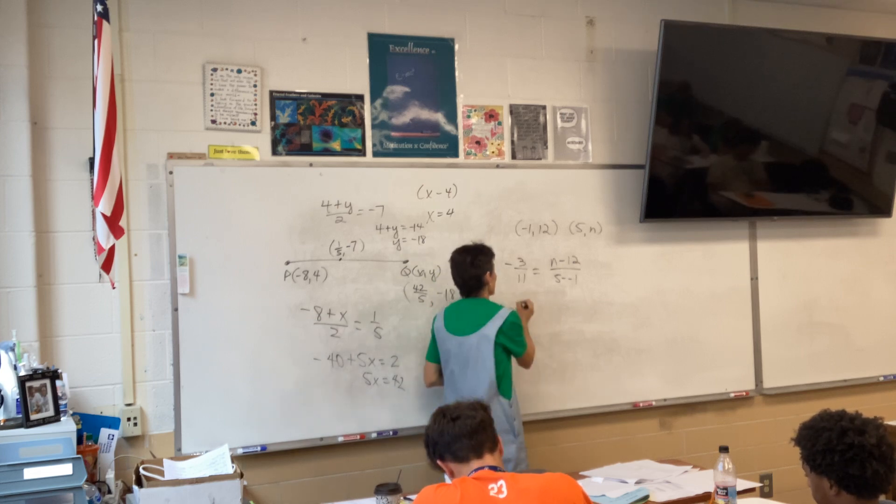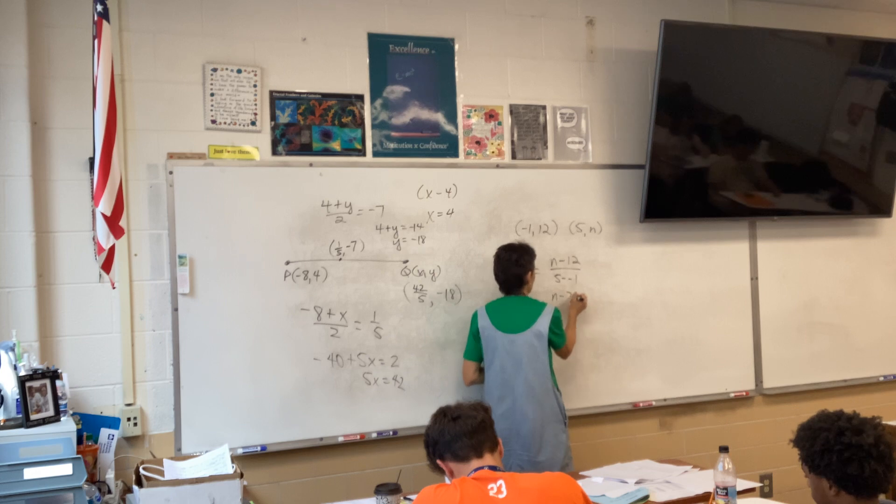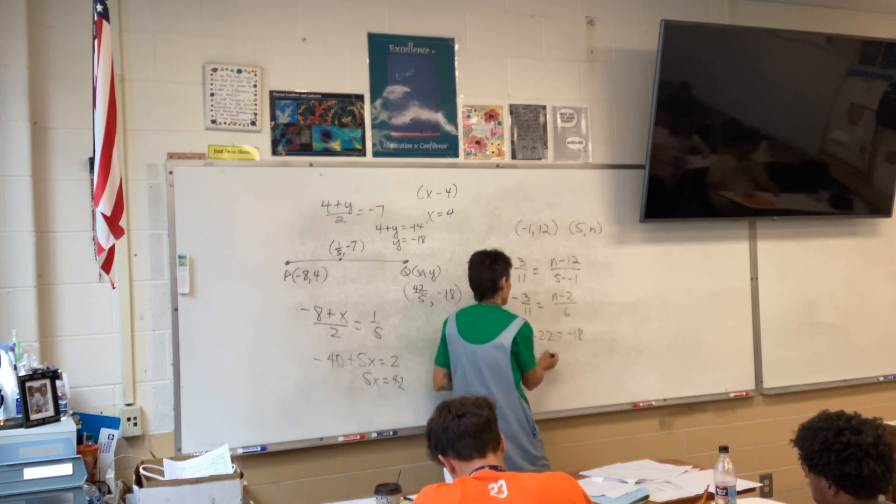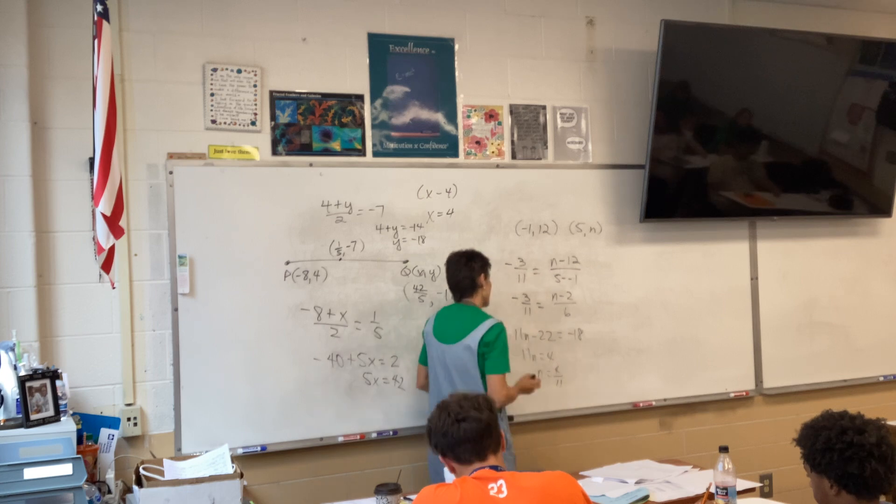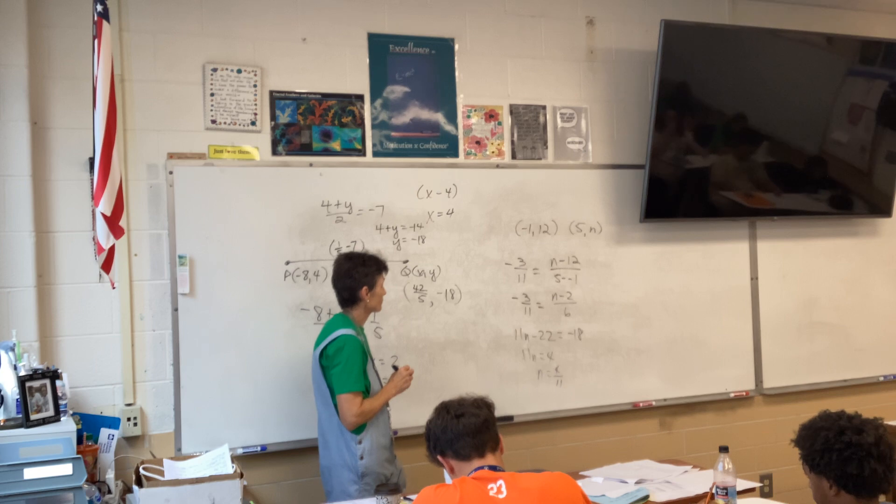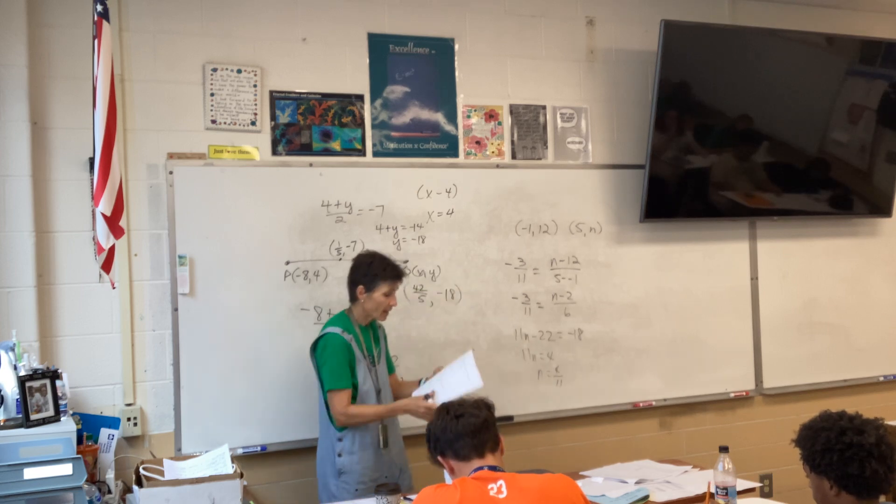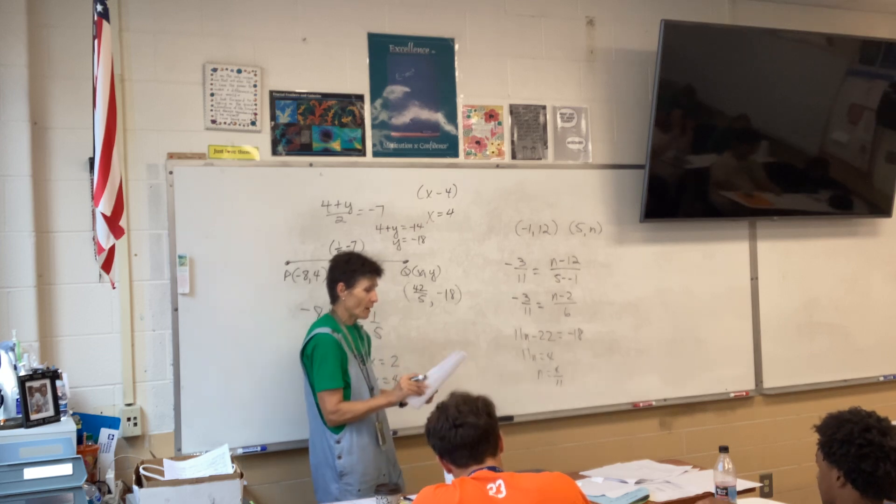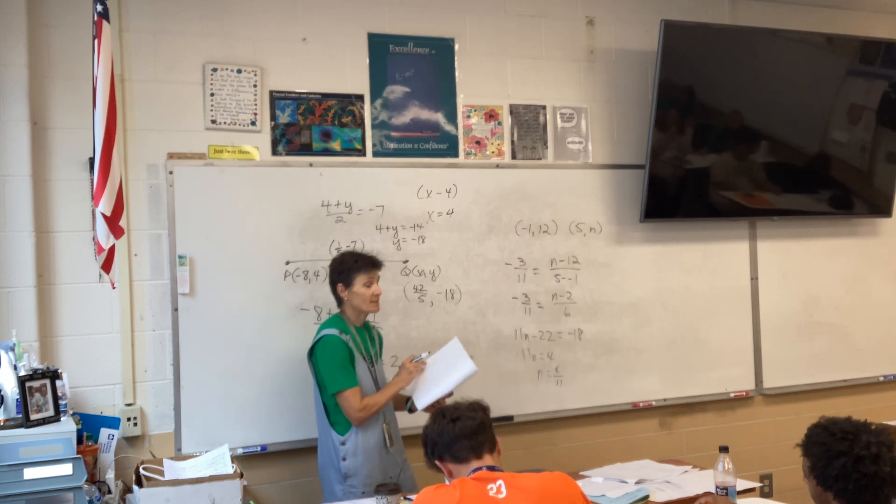So, they'll tell me that if I do N minus 12 over 5 minus negative 1, I should end up with negative 3 elevenths? Yeah. So, negative 3 elevenths equals N minus 12 over 6. I think I'll just cross-multiply again. So, 11N equals, I got 4 elevenths. Did I do that right?